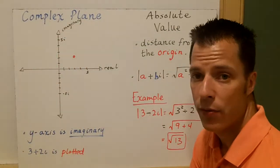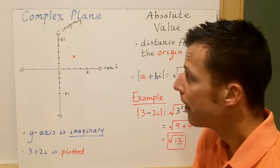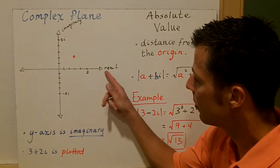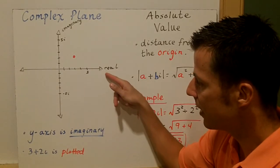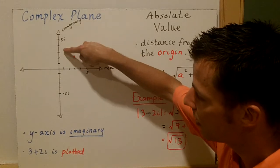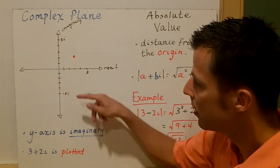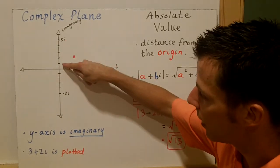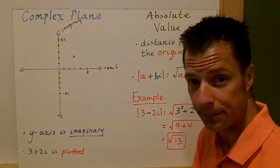One other thing we need to talk about is when we plot a complex number, the coordinate plane changes. The real part is the x-axis — so the x-axis is now the a-axis. Your imaginary part is the y-axis. So the y-axis becomes imaginary. Instead of going one, two, three, four, five, it would be i, 2i, 3i, 4i, 5i, and so on.